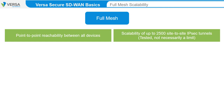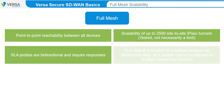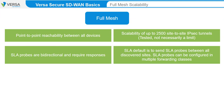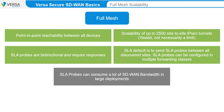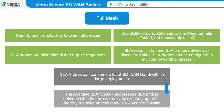A major consideration when deploying a Full Mesh environment is the SLA probes that are sent between devices to validate transport paths. SLA probes are bi-directional and require responses. In addition, it's common for probes to be sent in multiple forwarding classes to validate traffic profile requirements. In Versa Networks, probes are sent in the network control and expedited forwarding classes by default. Because of the potential overhead of sending so many SLA probes across the SD-WAN, Versa Networks has integrated features that suppress SLA probes between sites that are not actively communicating. This feature greatly reduces the amount of SLA probe traffic across the network while maintaining link status and performance monitoring throughout the SD-WAN domain.